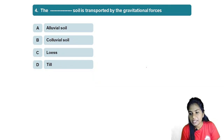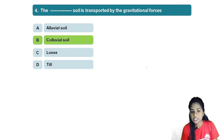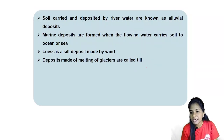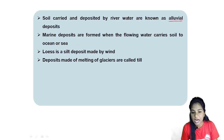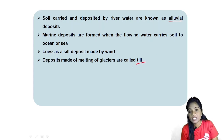Next question: soils transported by gravitational forces are called colluvial soils. Alluvial deposits are soils carried and deposited by river water. Marine deposits are formed when flowing water carries soil to the ocean or sea. Deposits formed by the melting of glaciers are called till.